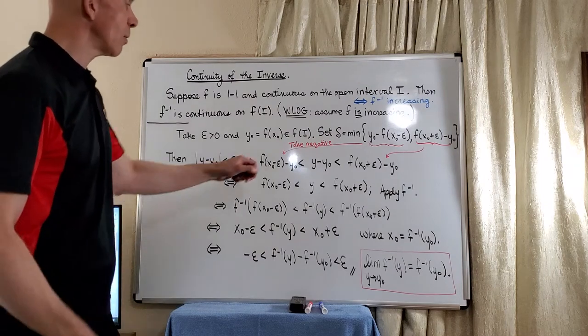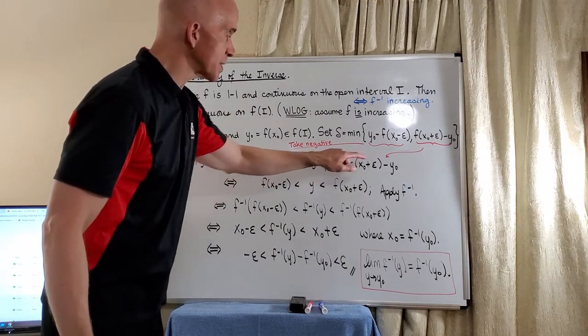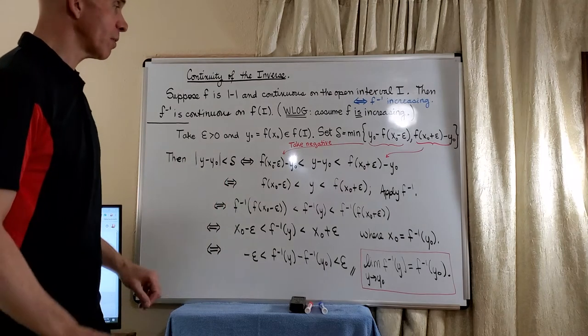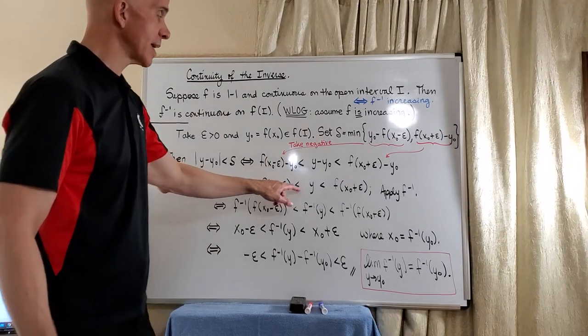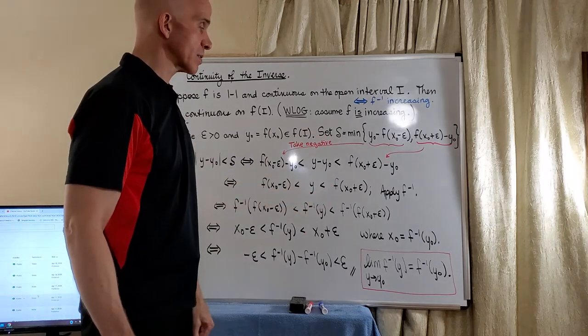So what you can see now is that all the y-naughts absorb—they're gone. And then we're left with f of x-naught minus epsilon less than y, less than f of x-naught plus epsilon.